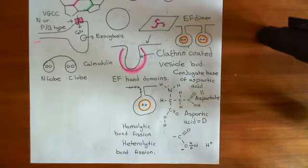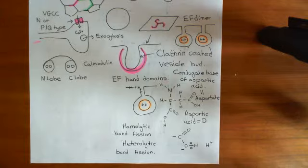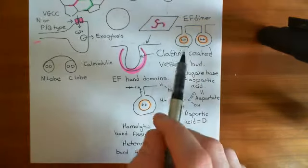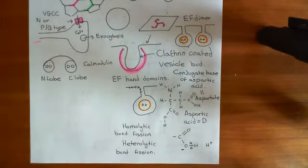Welcome back to this next video in which we are discussing clathrin-mediated endocytosis and the endocytic pathway. We were talking about calmodulin, and we've seen these EF dimers that each of the lobes of calmodulin has, which allows it to bind two calcium ions.